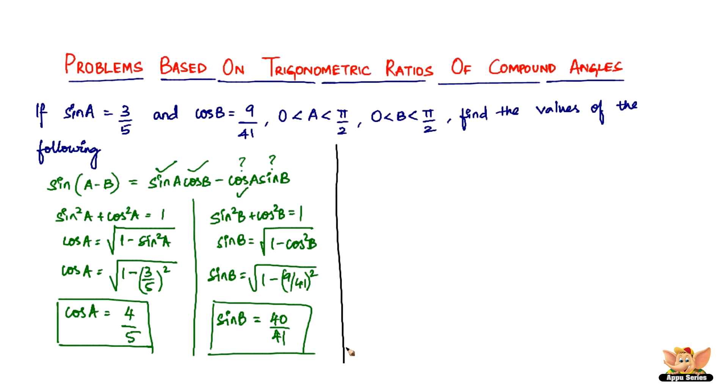Before that, let's quickly write the question down. The question is: find the values of the following. What are those following? The following is sin A minus B, then sin A plus B and cos A minus B and cos of A plus B. So here's the following. Let's start off with sin A minus B.